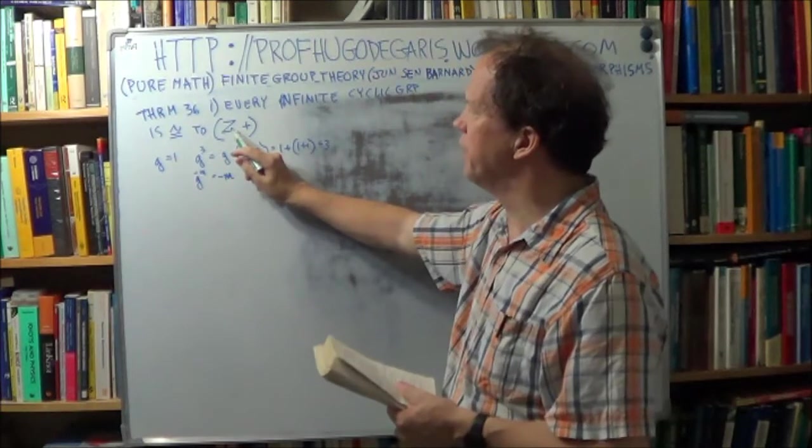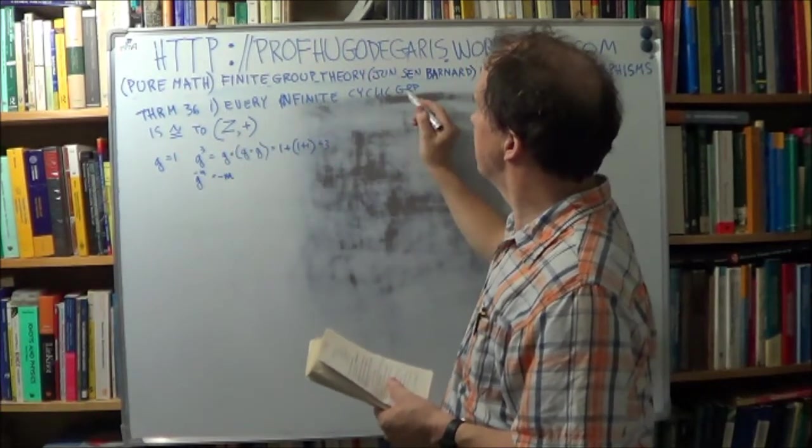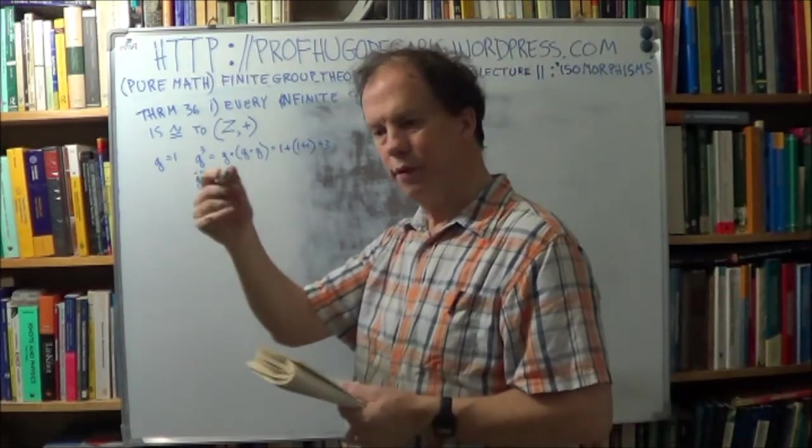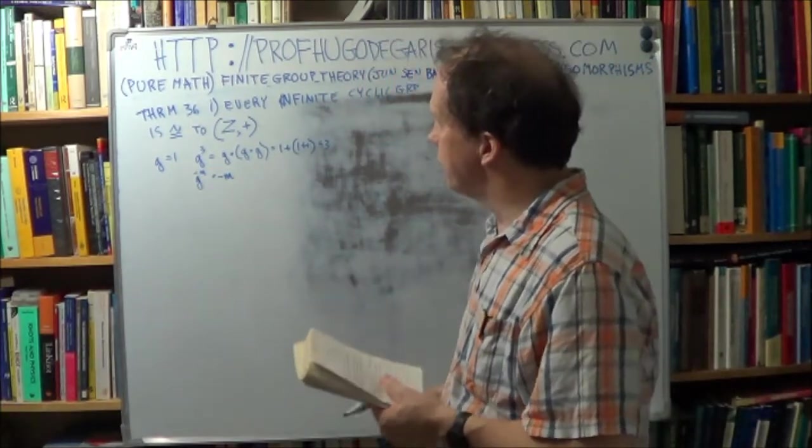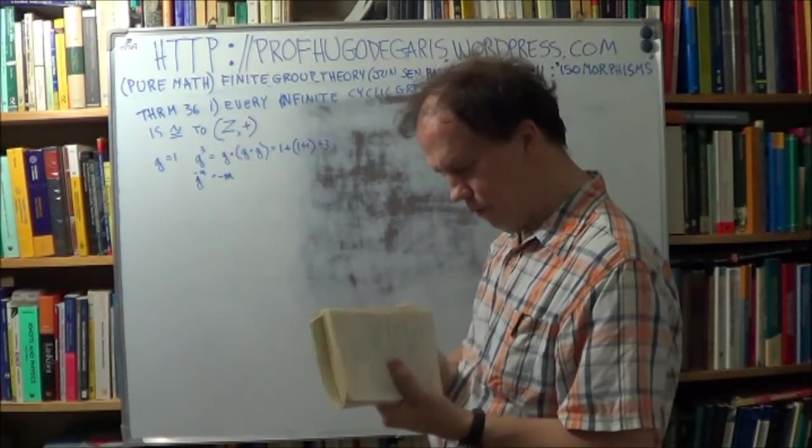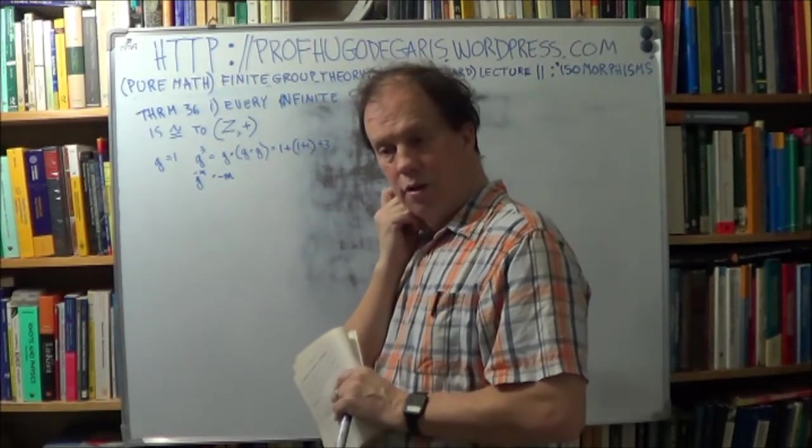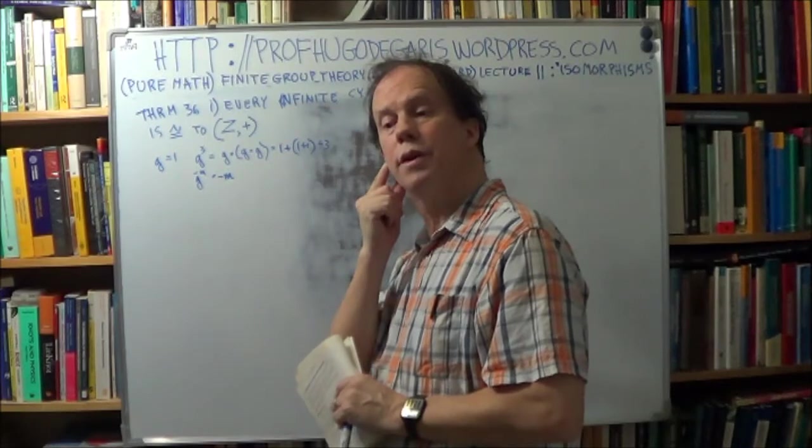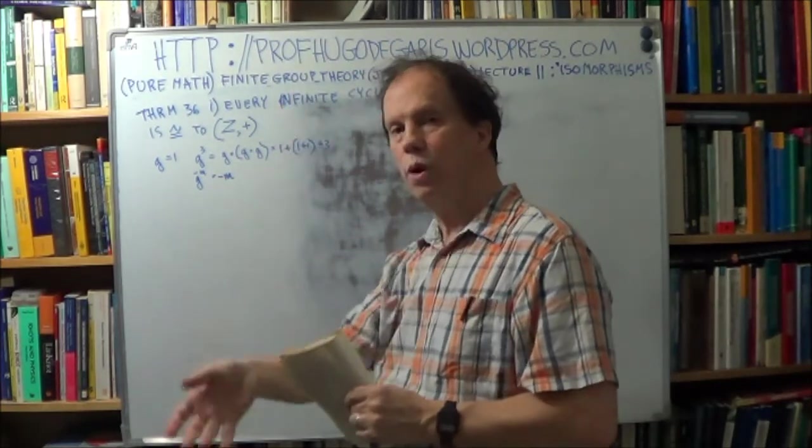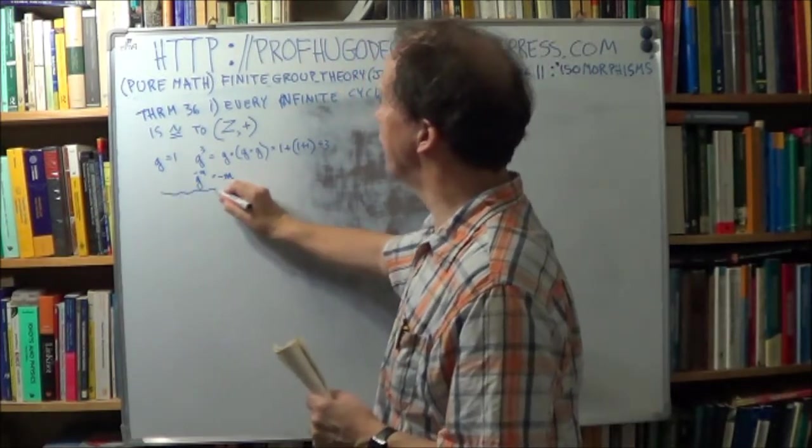So how to get an isomorphism? Now this is just a set of integers, right? We're talking about integers. And a cyclic group, you're talking about powers of the generator. So your first step in your proof is trying to find an appropriate mapping. You know, what's your F? It maps what into what? So that's your first creative step, right?